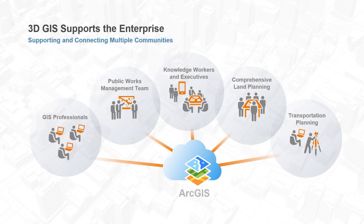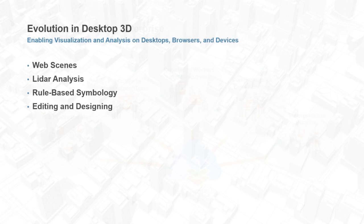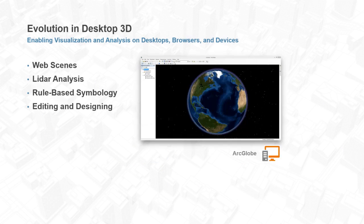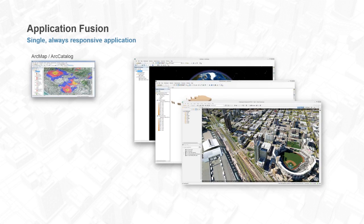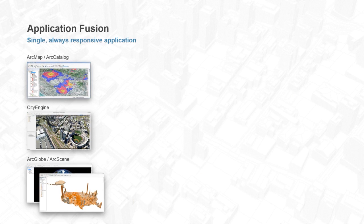Moving on, we've really talked about some of the major themes taking 3D GIS into the city. I now want to focus on how 3D is integrated into the actual product. ArcGIS supports the enterprise by connecting multiple communities across the platform. ArcGIS for desktop is made up of many familiar members like ArcGlobe, ArcScene, and CityEngine. At the 10.3 release, there will be a new application added to this product family called ArcGIS Pro. We're really taking the best of map, catalog, globe, and scene and fusing them into one application.